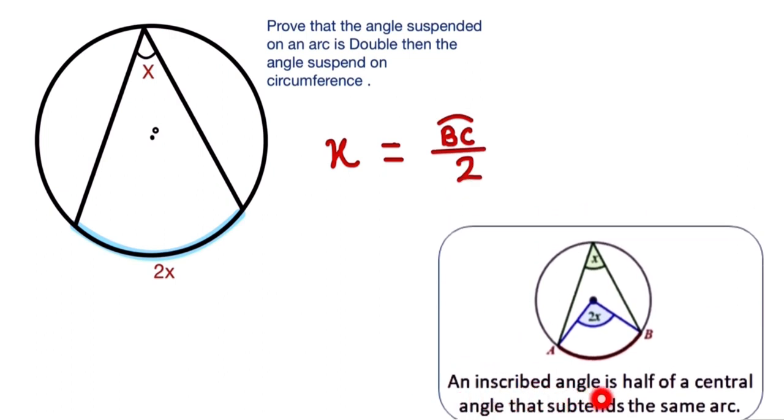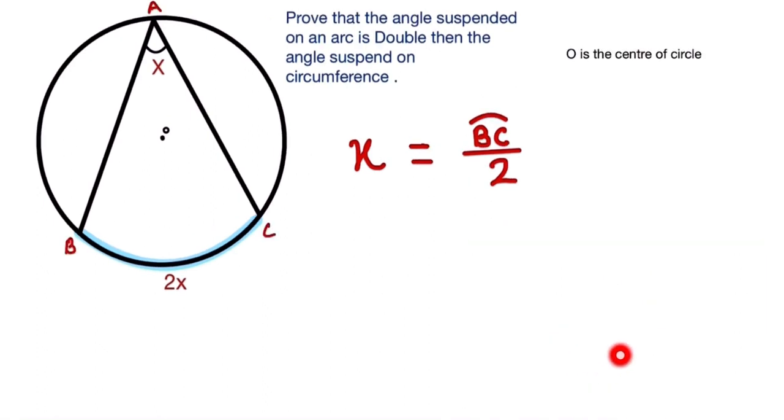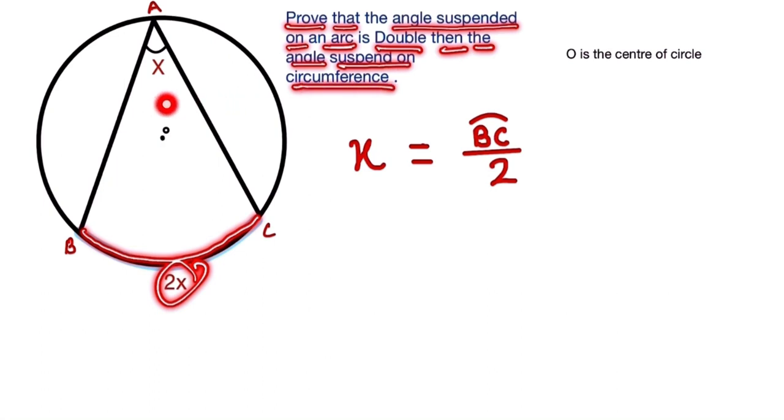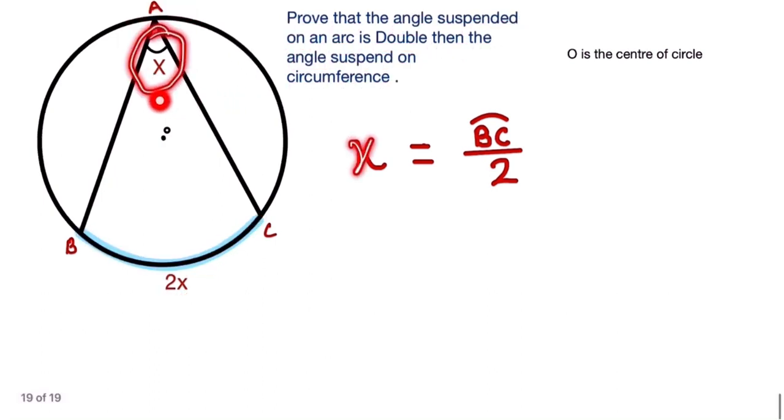The inscribed angle is half of the central angle that suspends the same arc. This is our question: prove that the angle suspended on an arc BC is 2x, then the angle suspended on circumference is x.